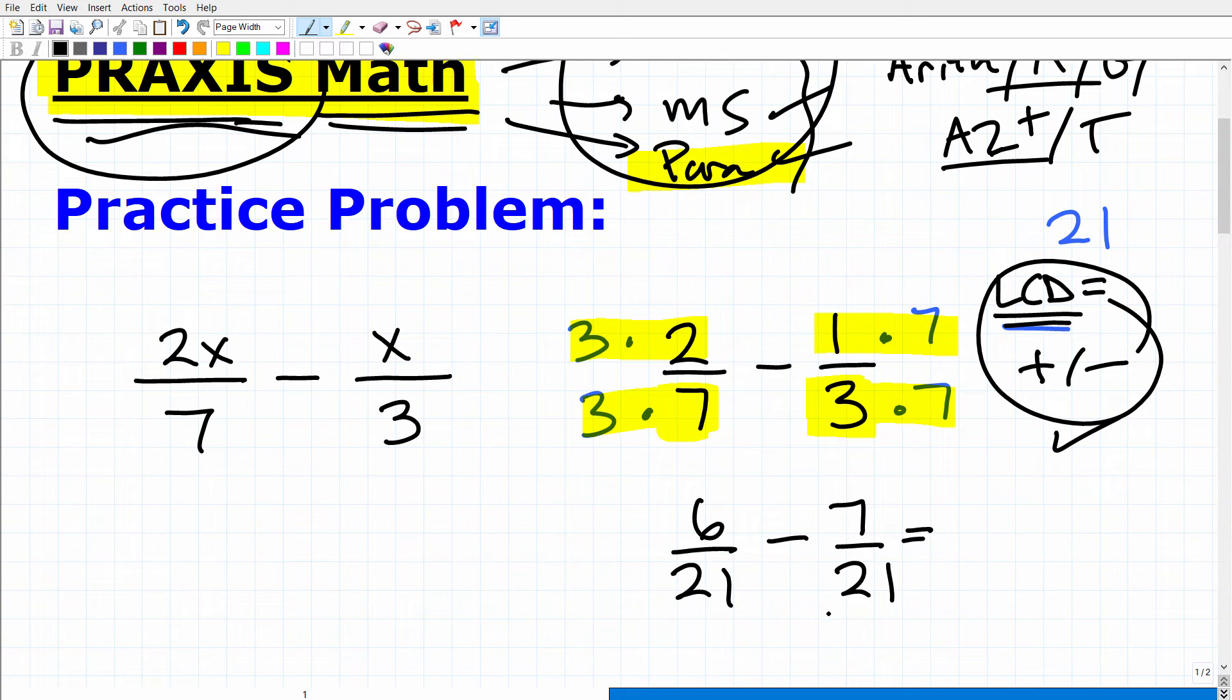So here is the problem. So what is the answer? I pretty much did like 90% of the work here for you. So what is the answer? Well, when the denominators are the same, what we do is we write the denominator, then we're going to go ahead and do this operation. It's going to be 6 minus 7 in the numerator, 6 minus 7. And what is 6 minus 7? Hopefully all of you said negative 1. So the final answer is negative 1 over 21.